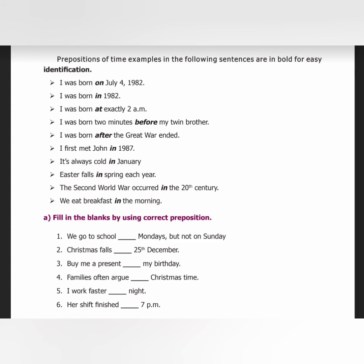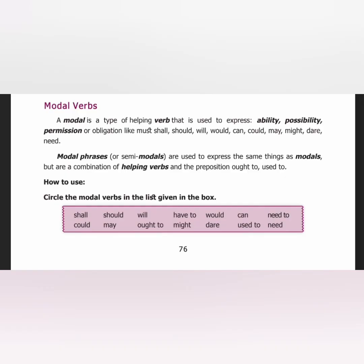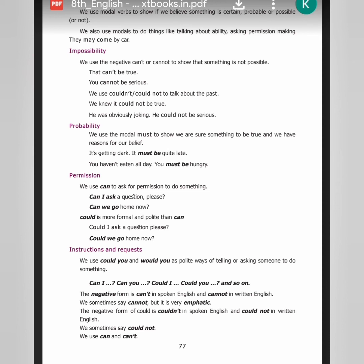Modal verbs are a type of verb used to express ability, possibility, permission. These words are: must, shall, should, will, can, could, may, might, dare, need. Semi-modals or modal phrases such as 'used to,' 'have to,' and 'need to' express the same things as modals. All are modal verbs except 'have to' and 'need to.' Modal verbs express your mood — ability, permission, obligation, or possibility.